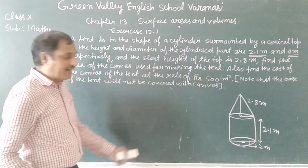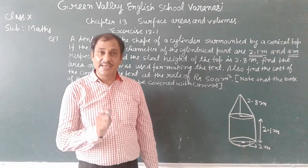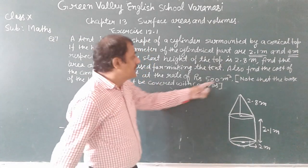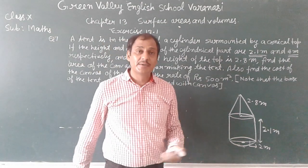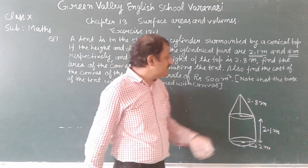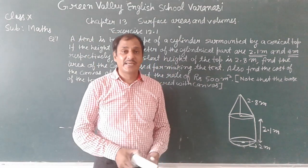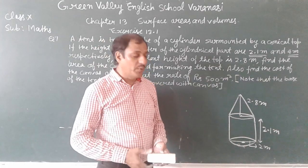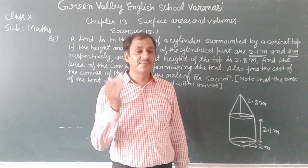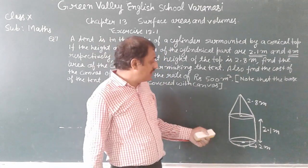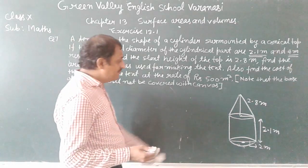We need to find the area of the canvas used for making the tent, and also the cost of the canvas at the rate of 500 rupees per meter square. Note that the base of the tent will not be covered with canvas. We have two figures: the cylindrical portion and the conical portion, and we need to find the curved surface area of each.